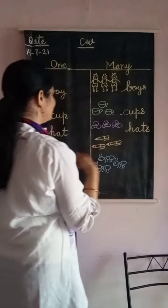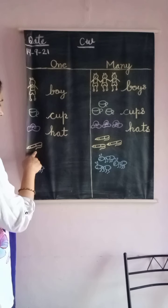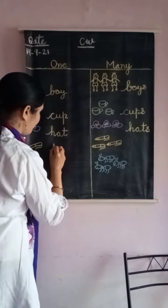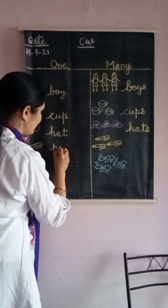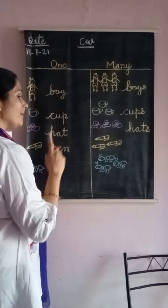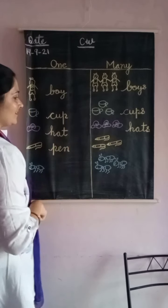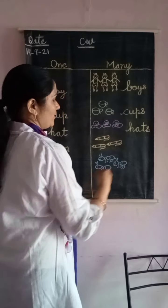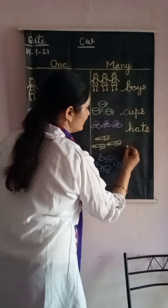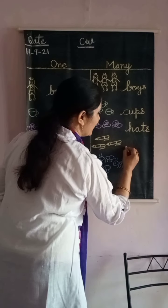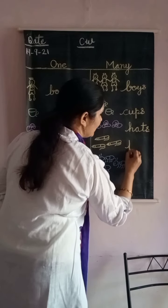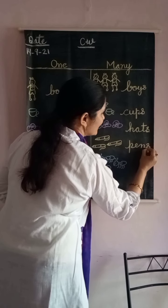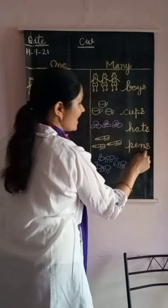There is one pen. We will write P, E, N — pen. But there are one, two, three pens, so we will put S: P, E, N, S — pens.